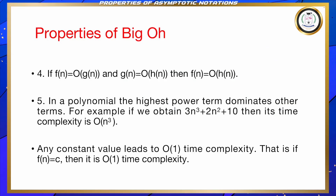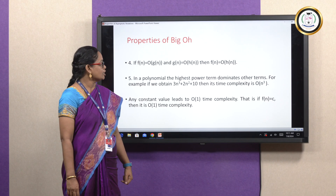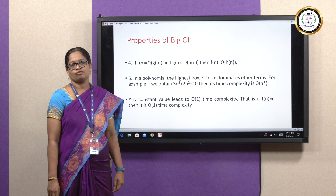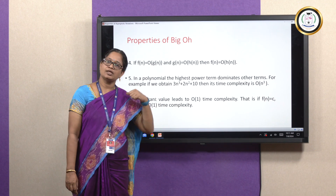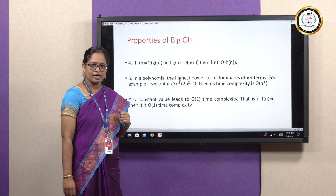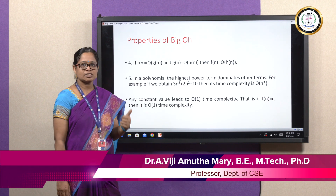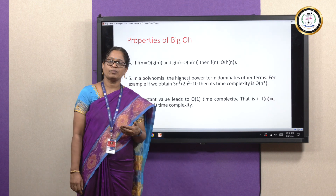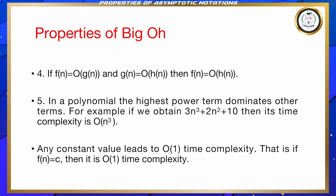The next property is again transitivity: if f(n) = O(g(n)) and g(n) = O(h(n)), then f(n) = O(h(n)). The next property states that in a polynomial, the highest power term dominates all other terms. For example, given a cubic equation 3n³ + 2n² + 10, the highest degree is 3; therefore, the time complexity is O(n³). It is a cubic order equation, and hence the time complexity is given by O(n³).